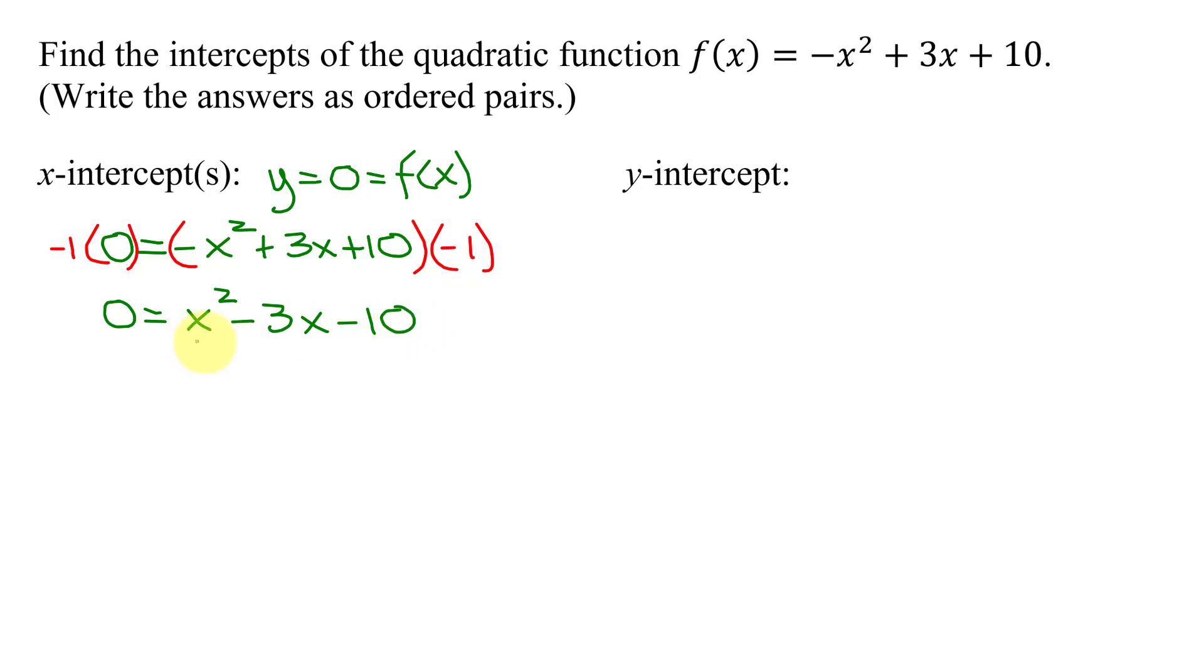So now I'm ready to factor this trinomial. It's one of the easier ones since the leading coefficient on the x squared is a 1. So hopefully these factors come to you quickly, but if not, I'm going to show you a systematic method for finding them, in which we compare it to x squared plus bx plus c. b, the coefficient of the x term, in this case is negative 3. c is the constant term, in this case it's negative 10. So I need 2 numbers that multiply to c of negative 10 and add to b, which is negative 3.